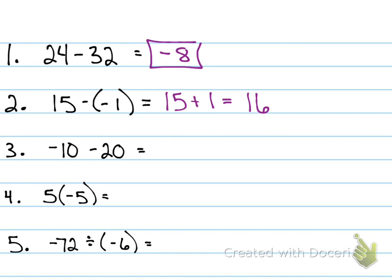Negative 10 minus 20? Negative 30. 5 times negative 5? Negative 25. Negative 72 divided by negative 6? Why positive 12? Because there's an even number of negatives. There's two negatives in my expression.